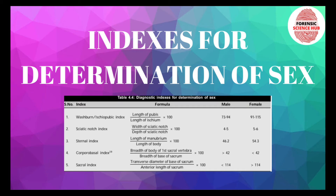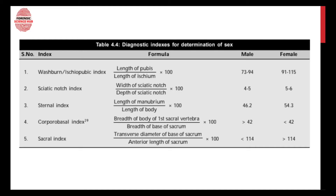Hello everyone, welcome back to my channel. In this video I'm going to discuss certain indexes for determination of sex, like for example the Washburn index, sciatic notch index, sternal index, etc. What we do here is measure certain bones of the body and then divide using a formula for every index, then multiply it by 100.